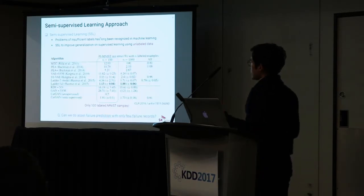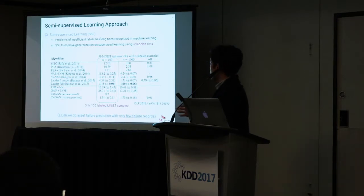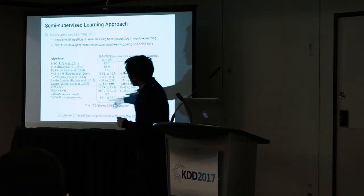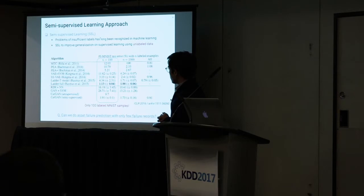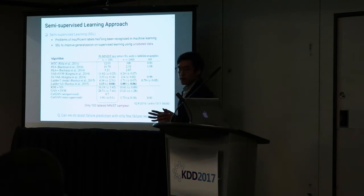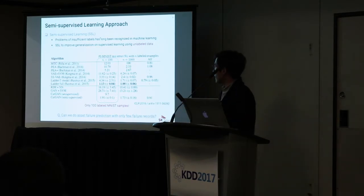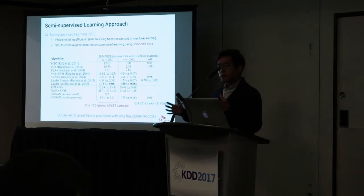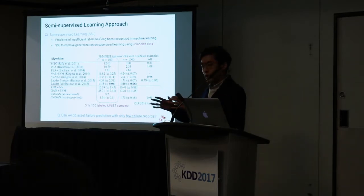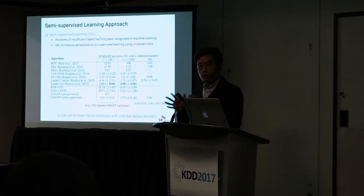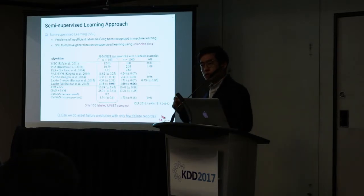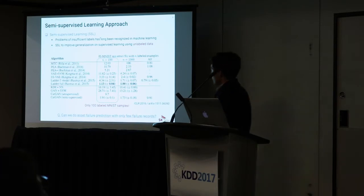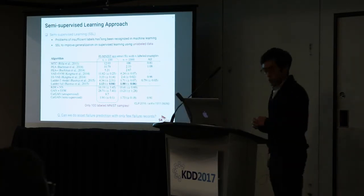As an MNIST analogy, people in the machine learning community have developed several techniques for semi-supervised learning and have achieved almost 1% error using only 100 labeled MNIST samples. They have 60,000 MNIST samples total, use the rest unlabeled, and use only 100 labeled samples to solve the handwritten digit recognition problem, achieving almost 1% error rate.